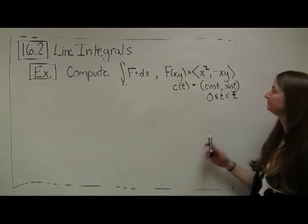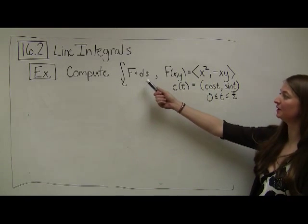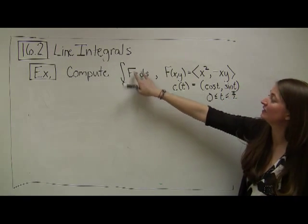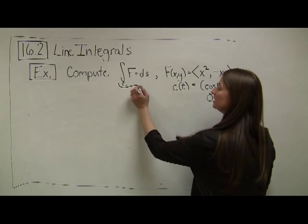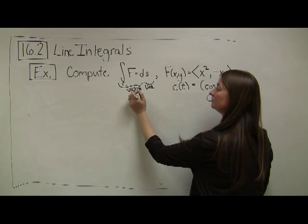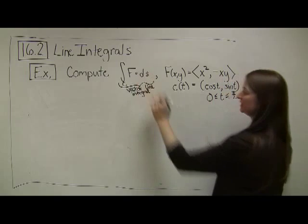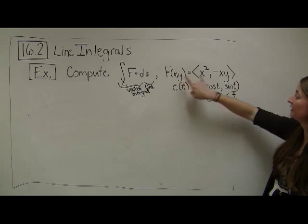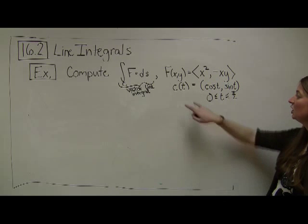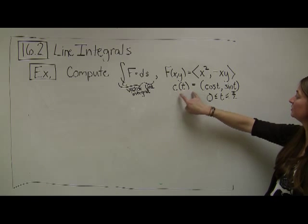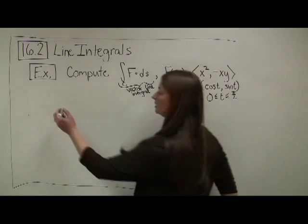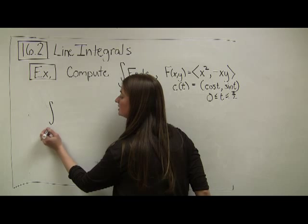Let's go ahead and compute an example of a vector line integral. This notation is asking me to compute the vector line integral. We're given our vector function: x squared for the first component and negative xy for the second component. We're also given the path: cosine t, sine t, as t goes from 0 to pi over 2.